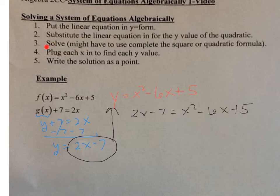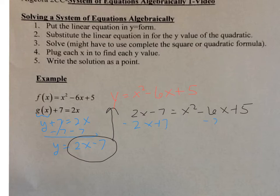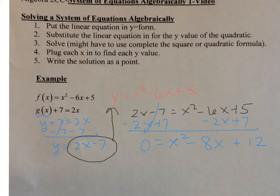Now you're going to solve this. You might have to either complete the square or use the quadratic formula depending on whether the solutions are rational or irrational. The first thing I'm going to do is set it equal to 0. So I subtract 2x and add 7, and I get 0 is equal to x squared minus 8x plus 12. I prefer to have the 0 on the right side, so I'll switch this around: x squared minus 8x plus 12 is equal to 0.